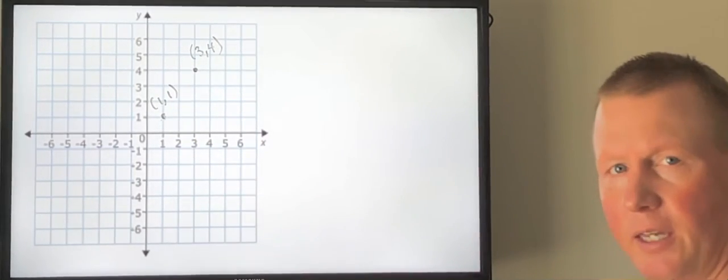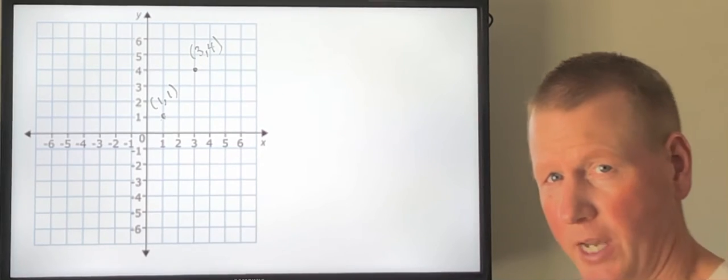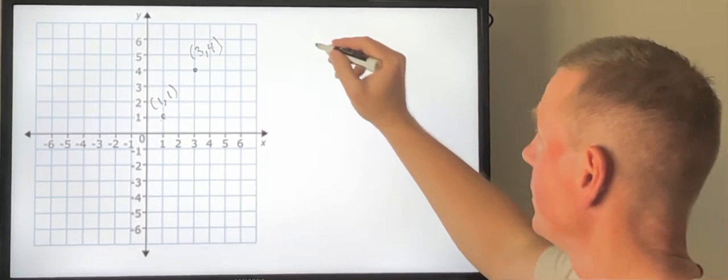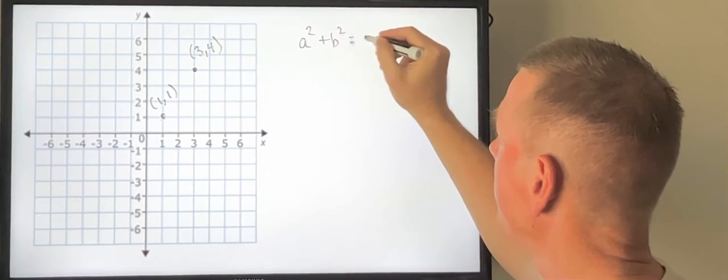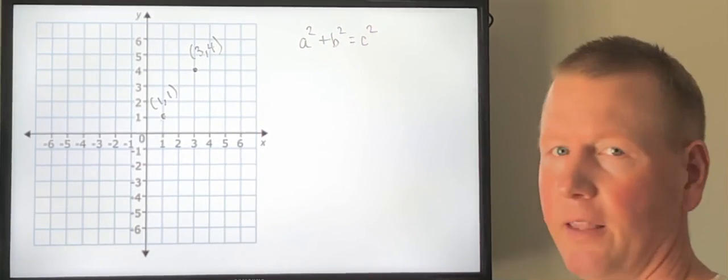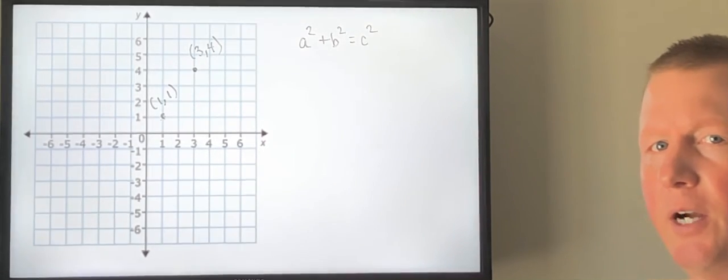We know that the Pythagorean Theorem states that a squared plus b squared equals c squared. That relates to the sides of a right triangle.